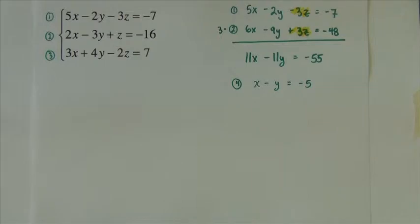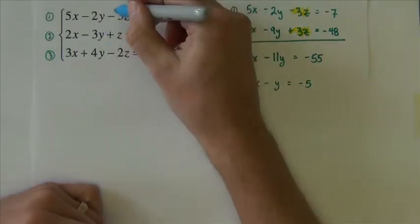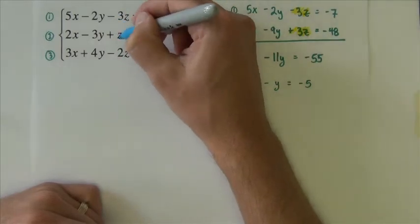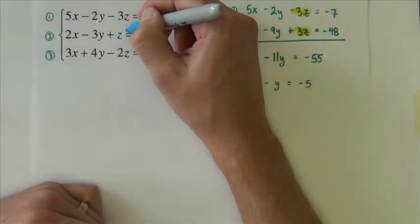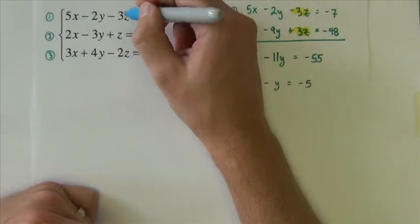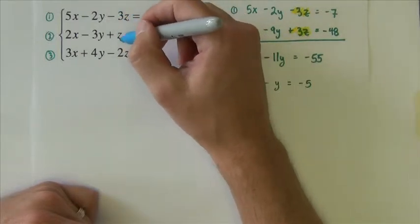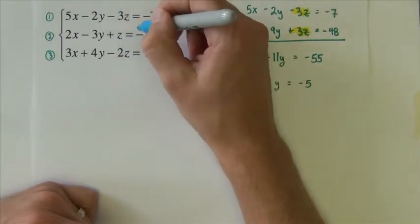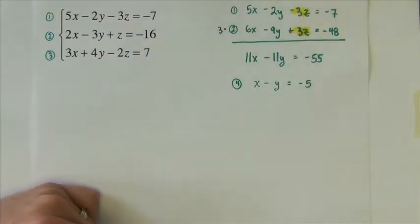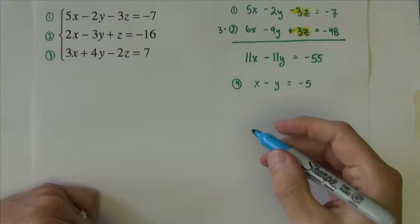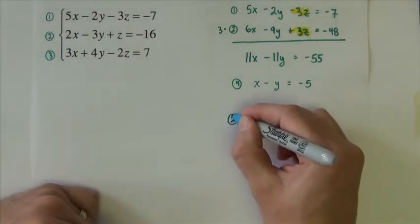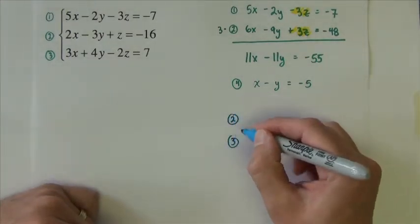Next, I'm going to go back to the original problem. And since I've canceled out z's already once, what I'm going to aim to do is cancel out z's again. But I can't pick the same two equations I just did. I had to pick either equations two and three or one and three. And you can pick whichever ones. It doesn't matter. I'm going to pick the ones I think look easier. I'm going to take equation two and three.